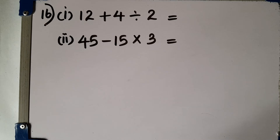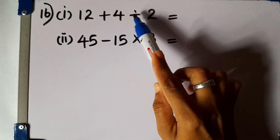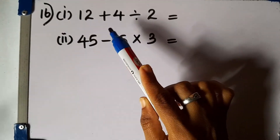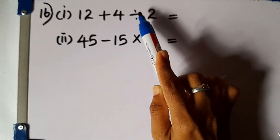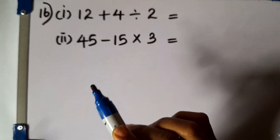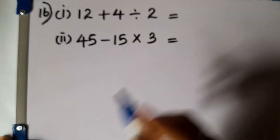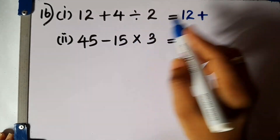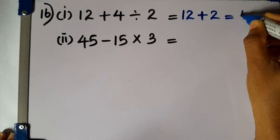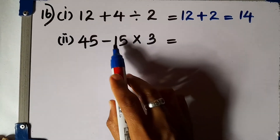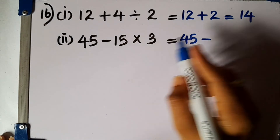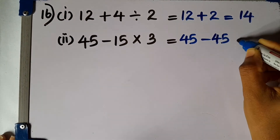Question number 16. Find the value. First part: 12 plus 4 divided by 2. When we have additions, subtractions, divisions, and multiplications, we perform division first. So 4 divided by 2 is 2, then 12 plus 2 is 14. Second part: 45 minus 15 times 3. Multiplication is performed first: 15 times 3 is 45. Then 45 minus 45 is 0.